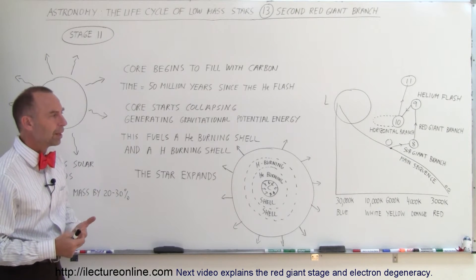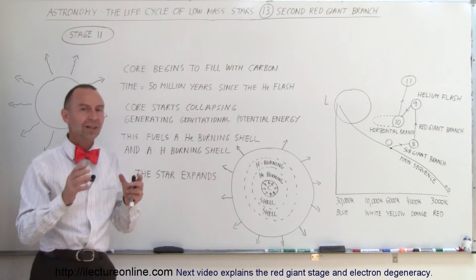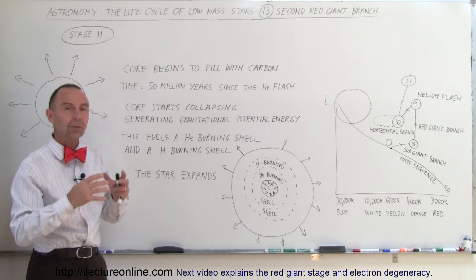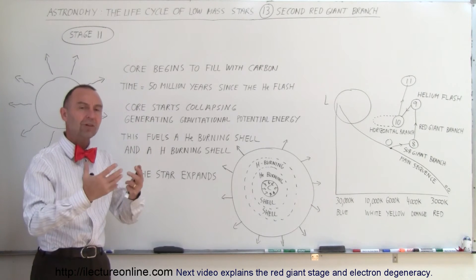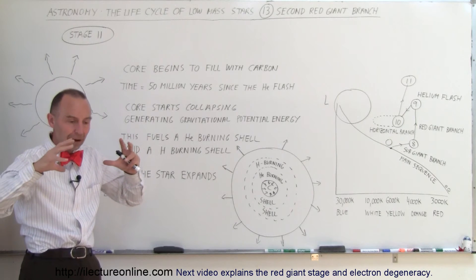Eventually the whole core begins to fill with carbon, and once that happens the fusion process from helium to carbon tends to slow down. When it slows down, less heat is generated. Gravity takes over and wins the balance of forces between radiation pressure and gravity.